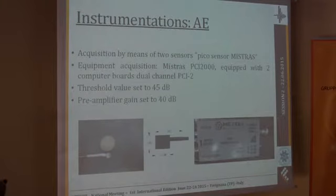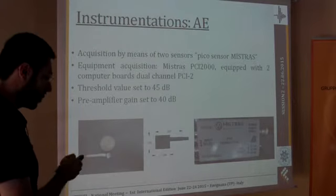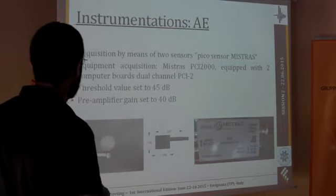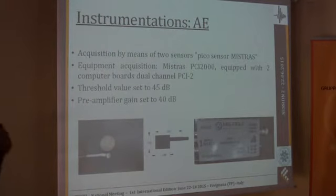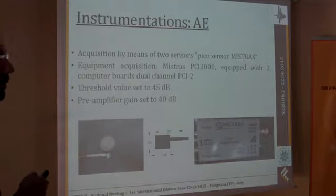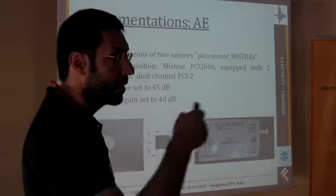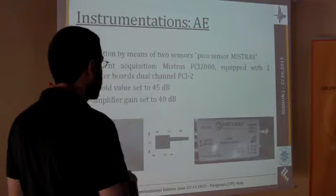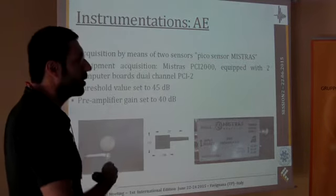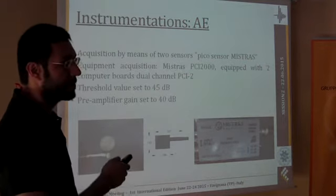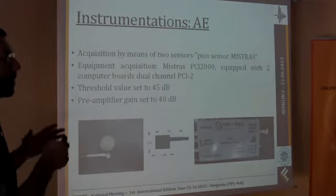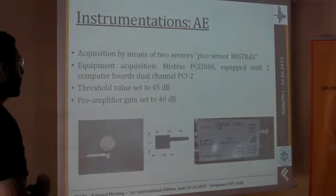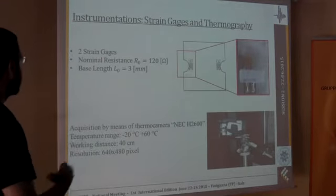Then we have two acquisition channels with a pre-amplifier, that is shown there in the picture, and the gain was set at 40 decibels, and also we have set the threshold value of 45 decibels, that means that only the signals which are above this threshold are detected. This is a value that comes out from some preliminary calibration of the system, I mean the specimen plus the machine which we use to get the fatigue test.